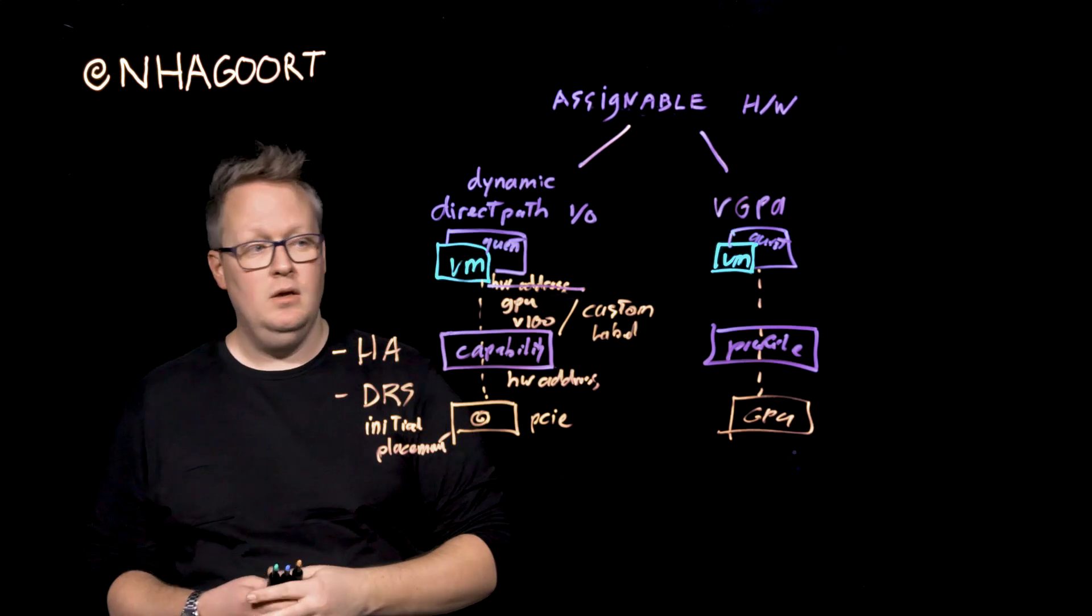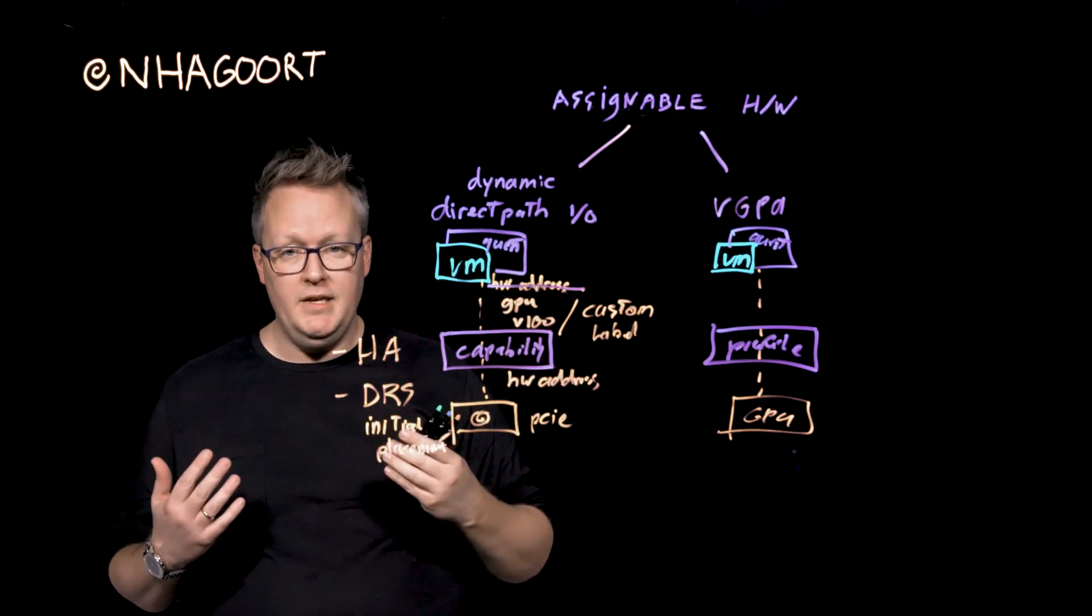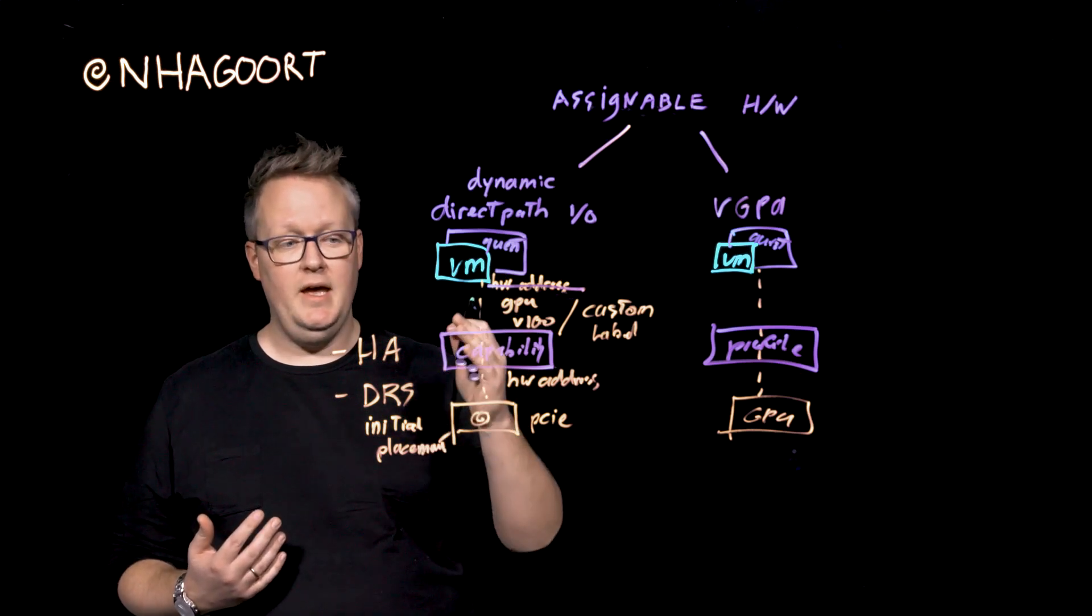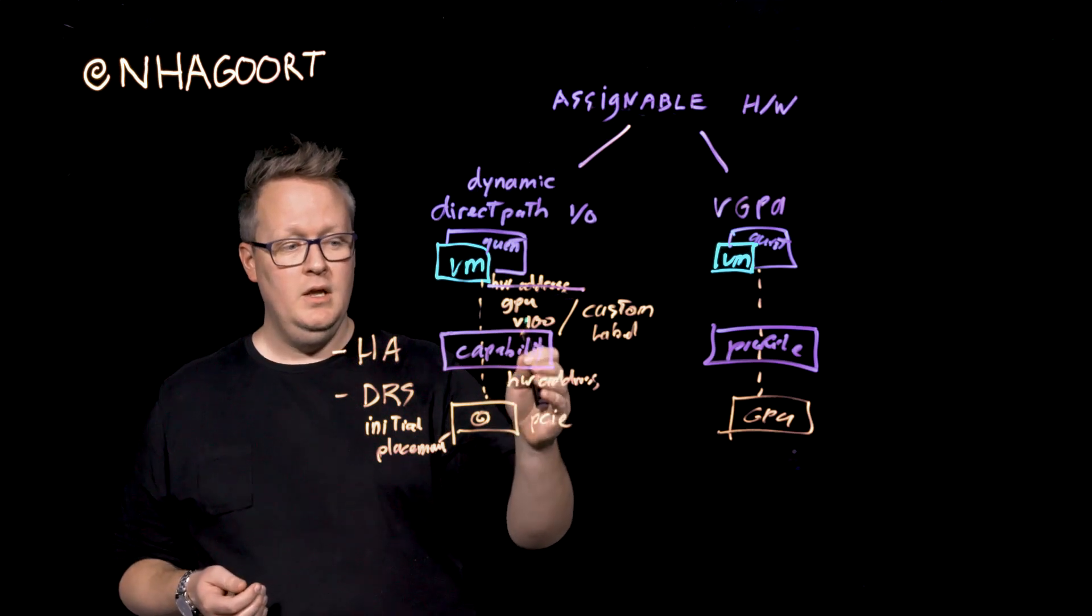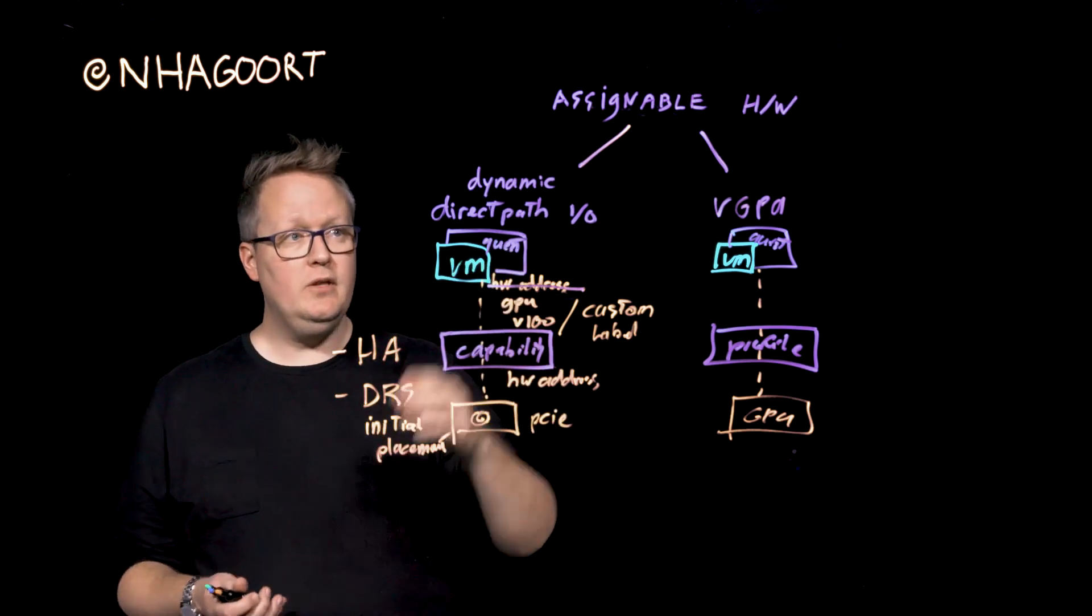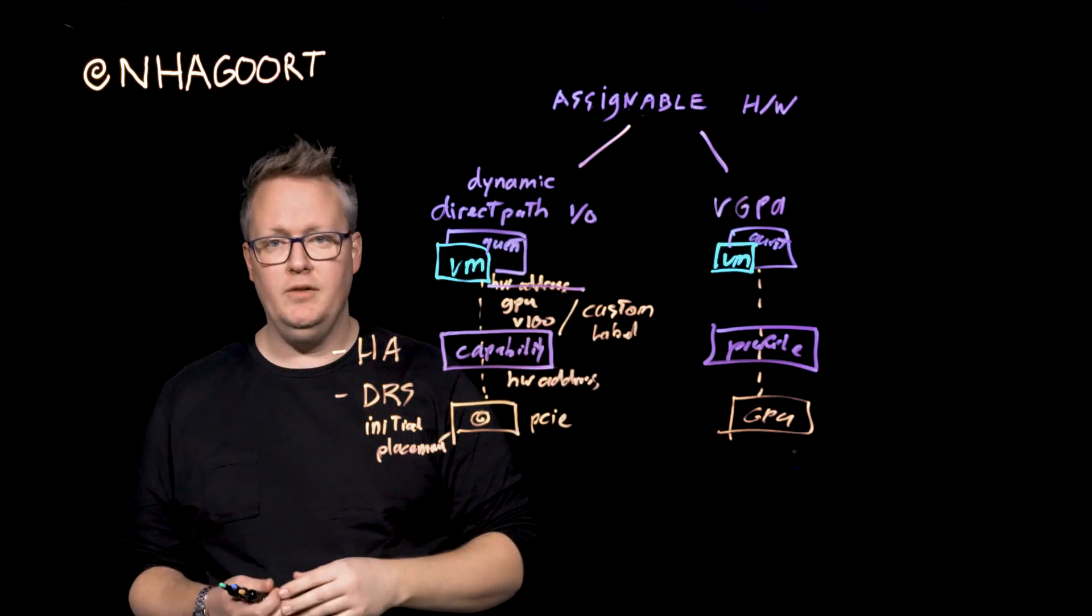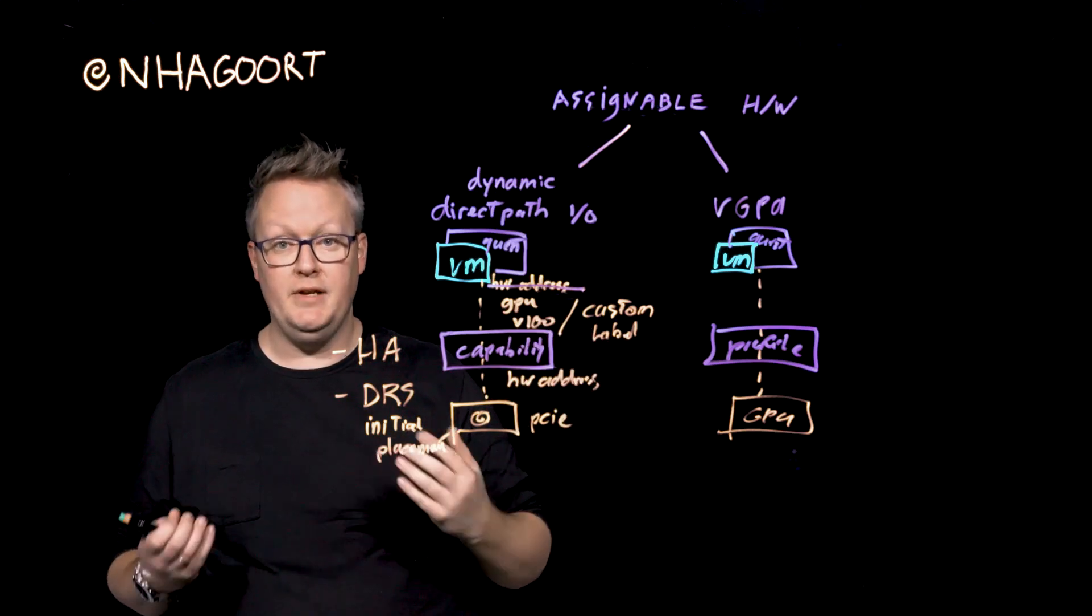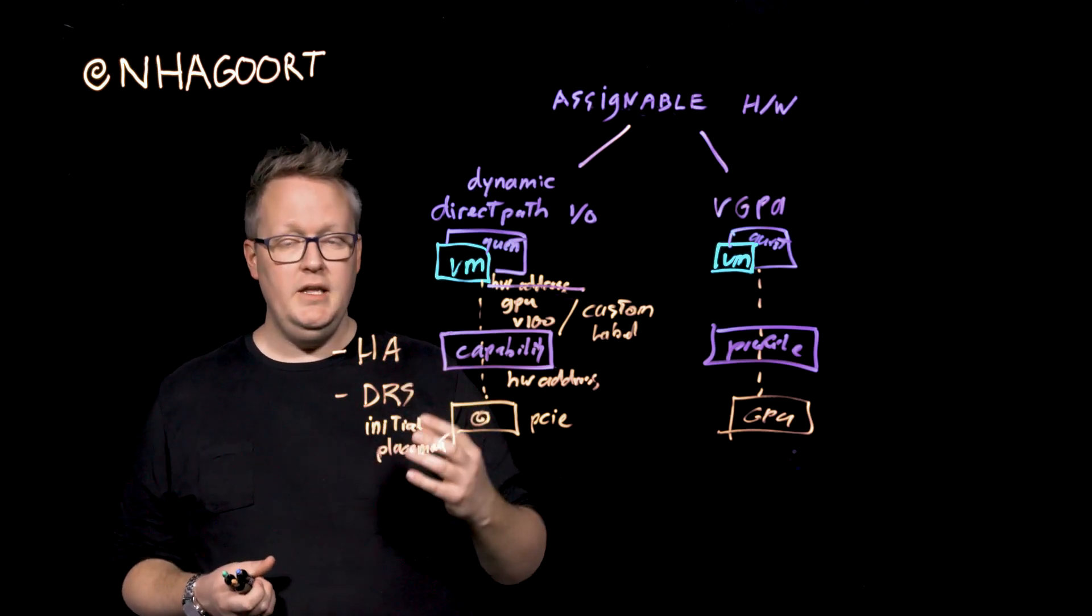So maybe this is about a GPU. Maybe we have a specific network interface card, a NIC as well, that is configured for latency sensitive workloads, for example, directly linked to a virtual machine. We can do the same with direct path IO, and we can maybe introduce a custom label as well that is specific for specific network requirements. So a lot of possibilities, a lot of freedom of choice here, but in the end, the key takeaway is that we now reintroduce portability for virtual machines.